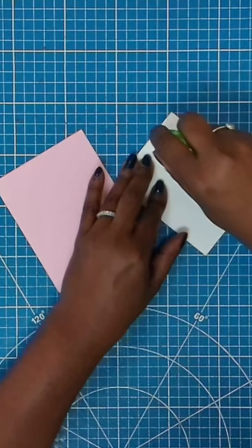Add tape to the back of the white cardstock. Place it down on this piece.